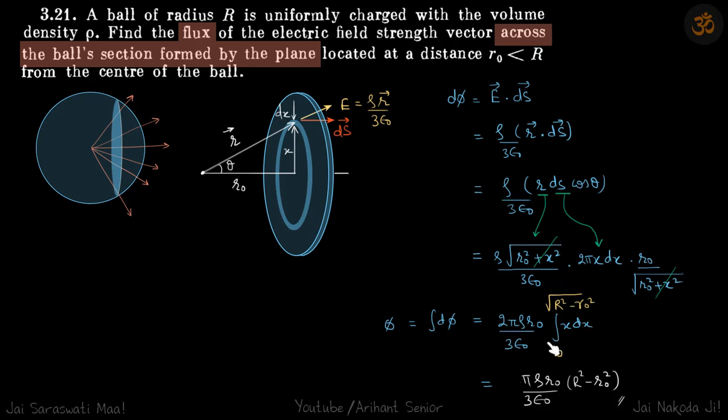We simplify this and put the limits of x from 0 to this height. This height is square root of capital R square minus r₀ square.